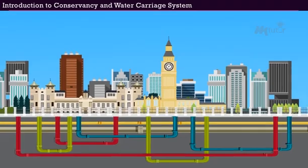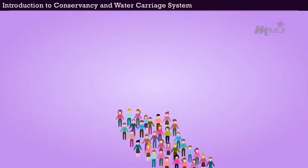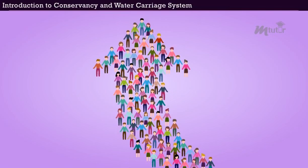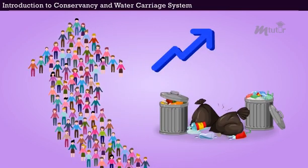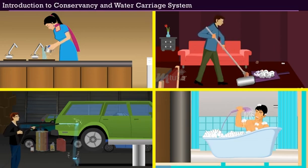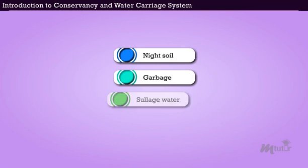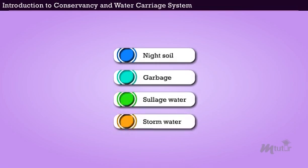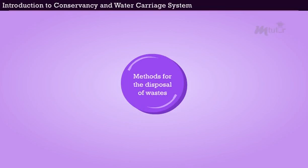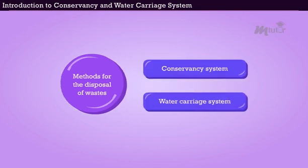Especially, there is a need for a good waste disposal system, because since there is an increase in population, invariably there will be an increase in waste too — especially in households. Some of the wastes generated in a household are night soil, garbage, sullage, and stormwater. There are two methods employed for the disposal of wastes: the Conservancy System and the Water Carriage System.